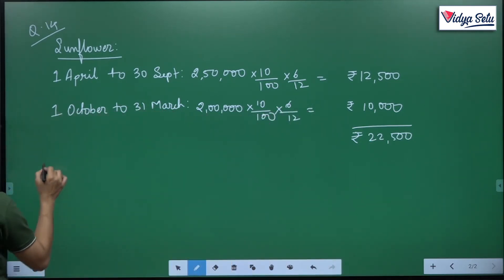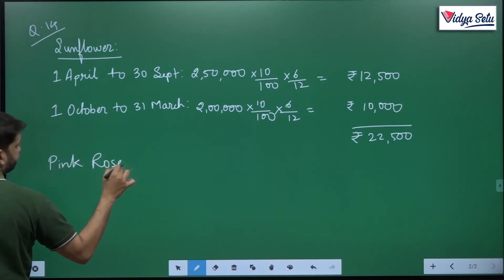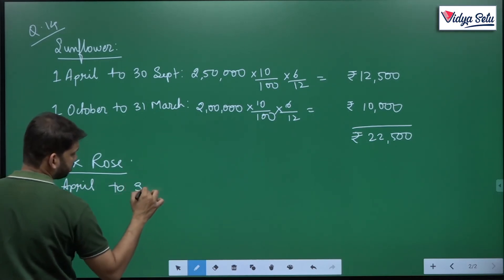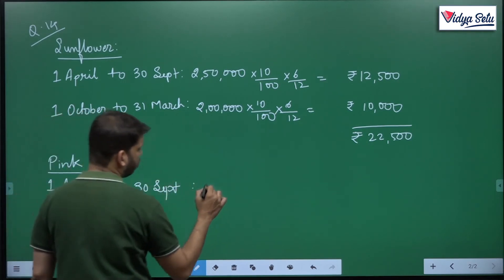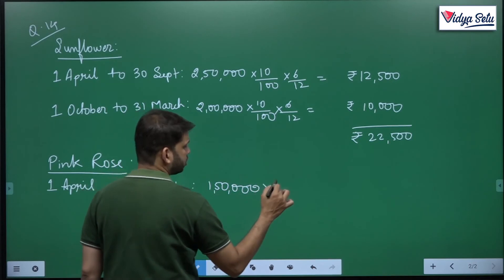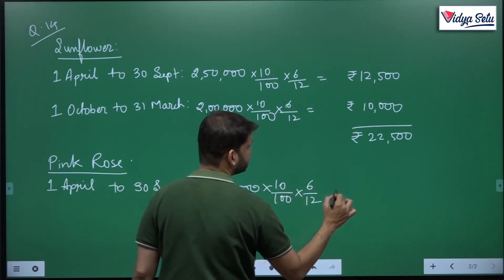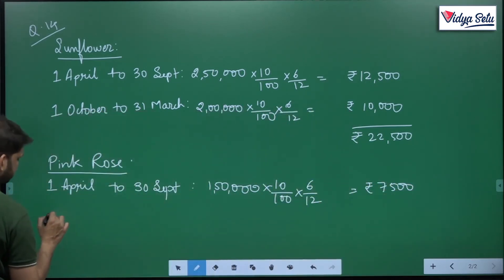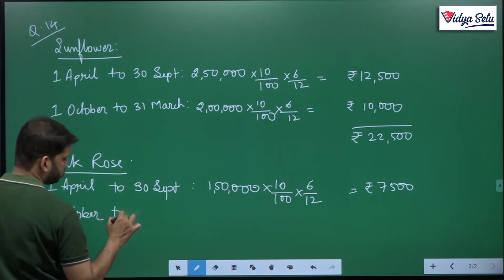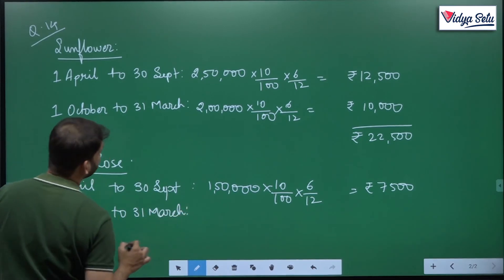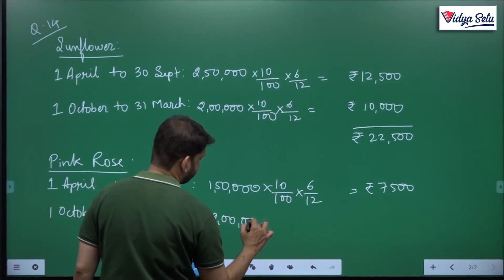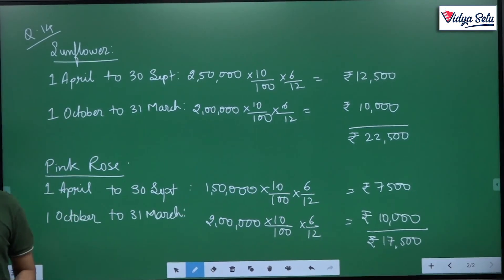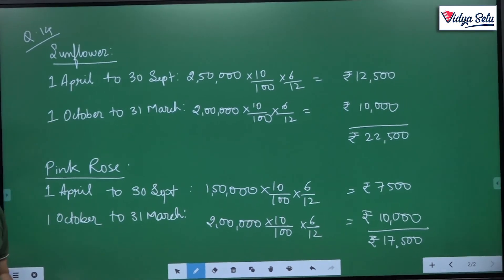Similarly, we will calculate for Pink Rose. From 1st April to 30th September on 1 lakh 50,000, 10 percent for 6 months we get rupees 7,500. And for the remaining 6 months from 1st October to 31st March on 2 lakh, so just copy this down.